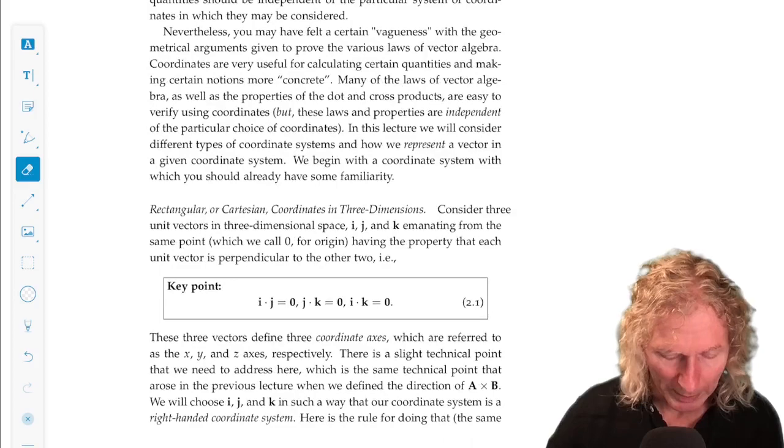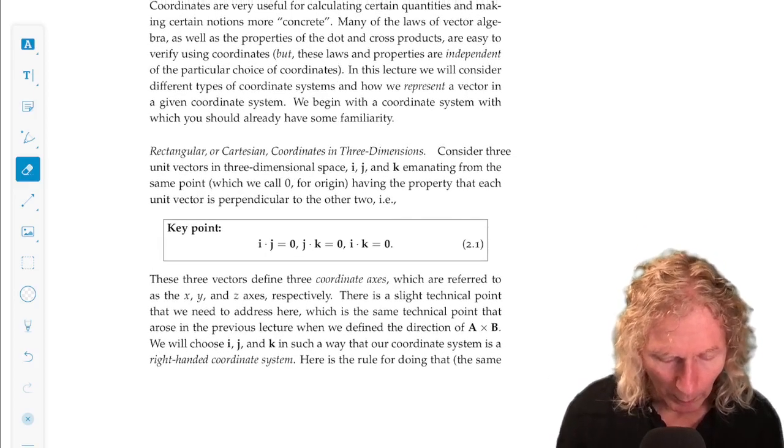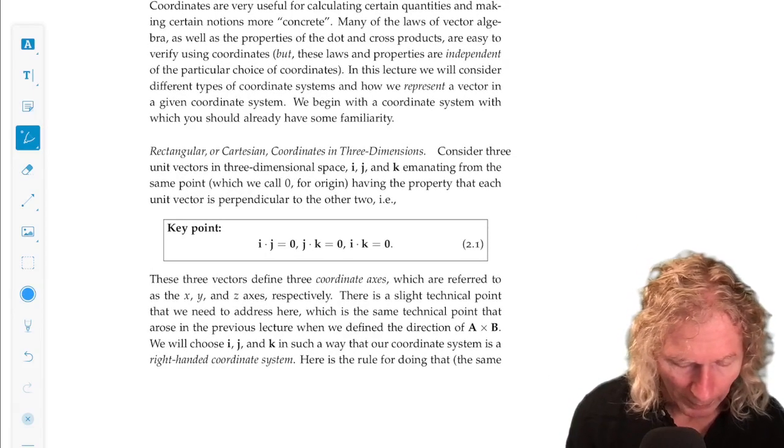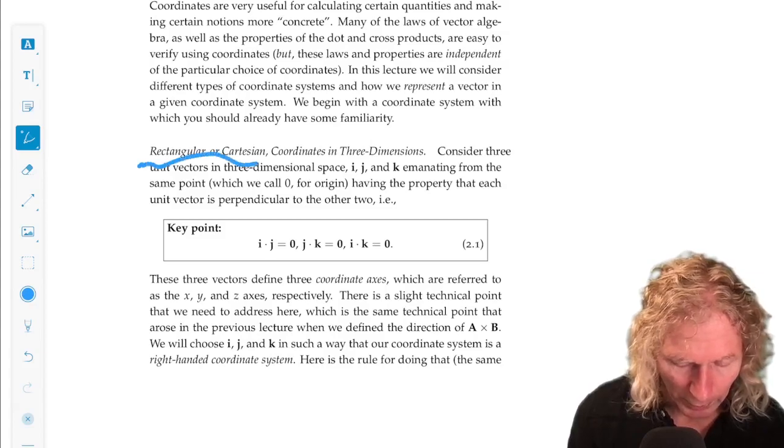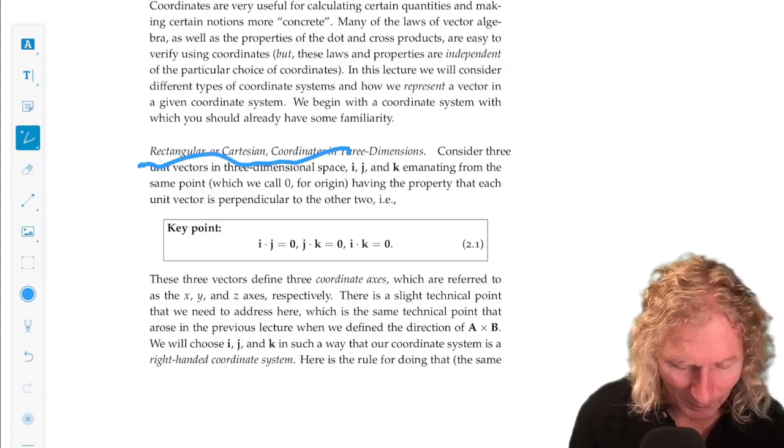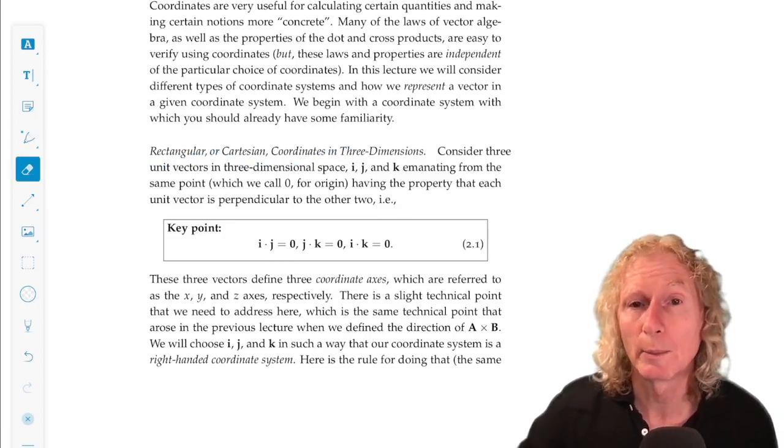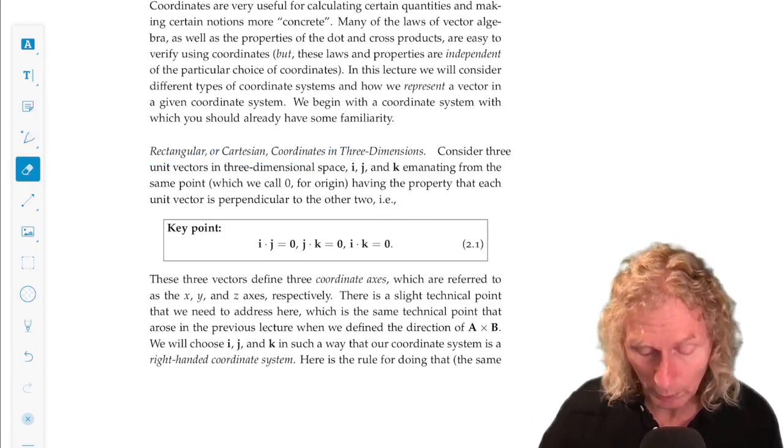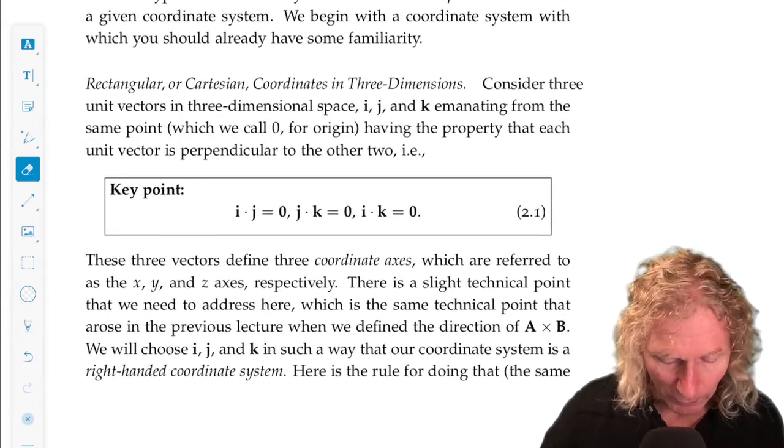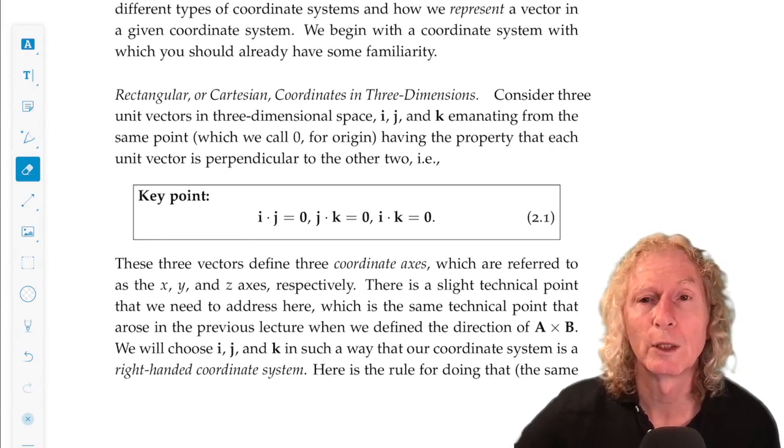So to begin we're going to define what we will call rectangular or Cartesian coordinates in three dimensions. What we need to do is define three independent directions, and we're going to do that by defining three unit vectors.